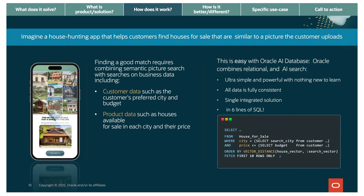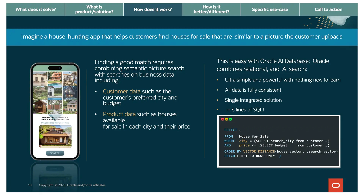Let me show you this in action with a house hunting app example. The customer uploads their dream home style — maybe a craftsman bungalow from a vacation — and wants similar houses in their city within their budget. The technical challenge is finding matches combining the semantic meaning of the picture with business data like their preferred city, budget, and what houses are available at what prices. Oracle provides this in a very easy-to-use way. Look at the SQL query — it's six lines. That's it. A traditional WHERE clause filtered by city and budget, plus vector distance finding semantically similar houses. This is all just SQL — no new query language. If you know SQL, you can build AI-powered apps. It's fully consistent with no synchronization issues, one query, one database, all with six lines of SQL.